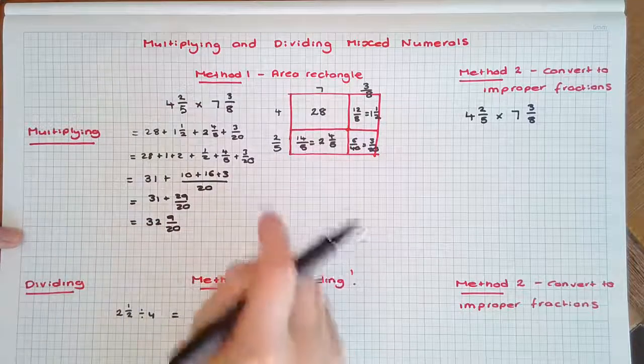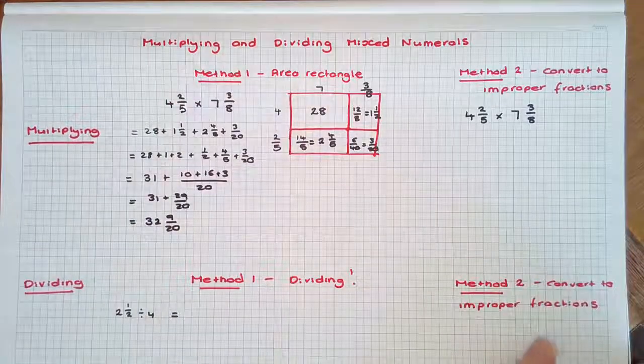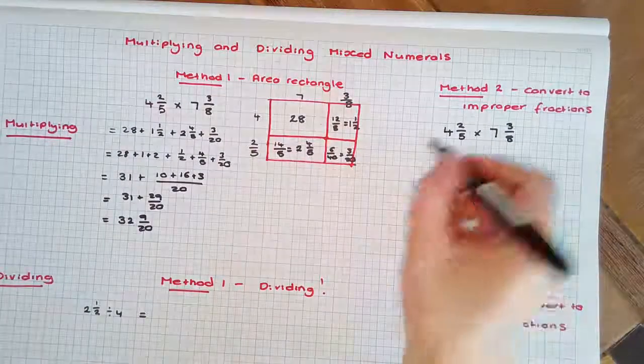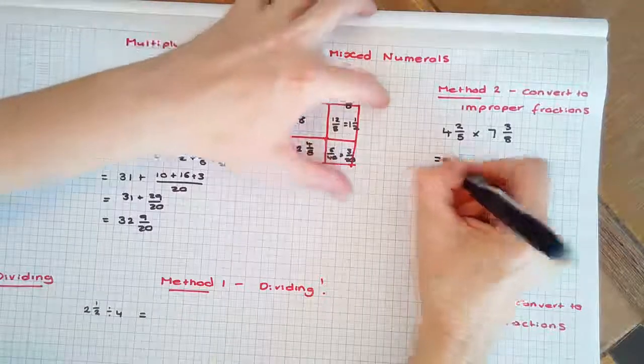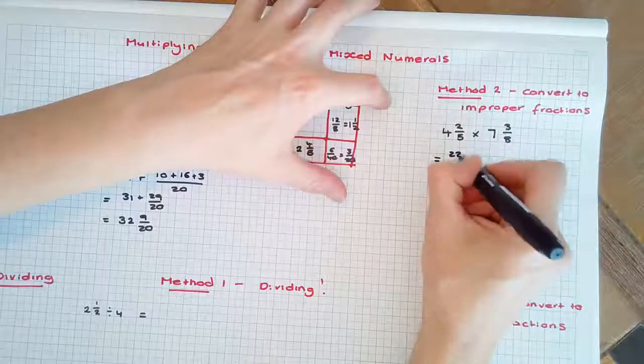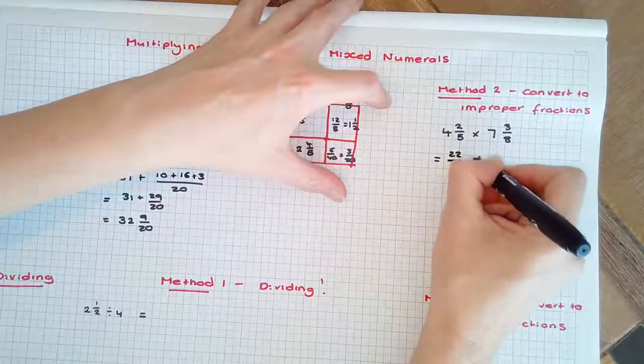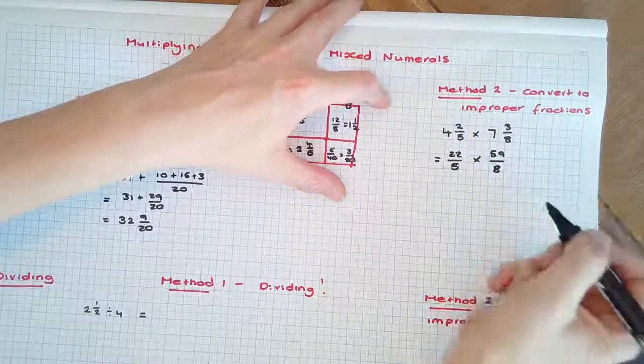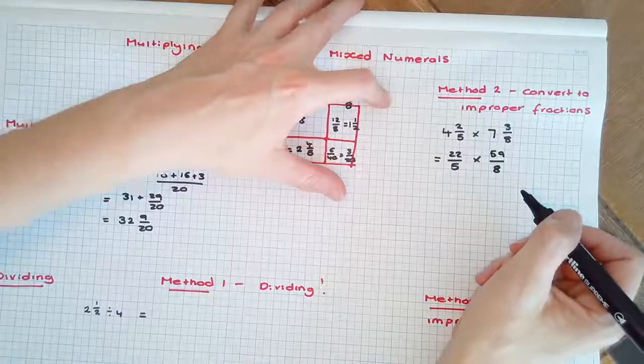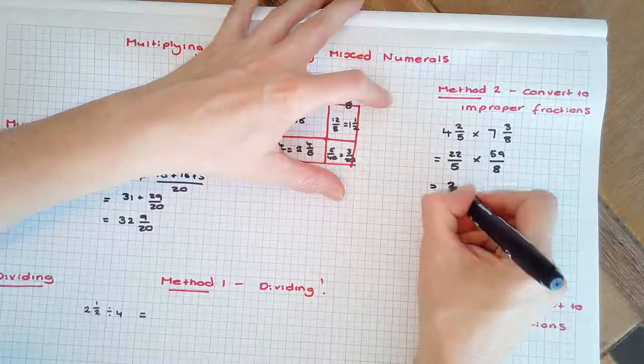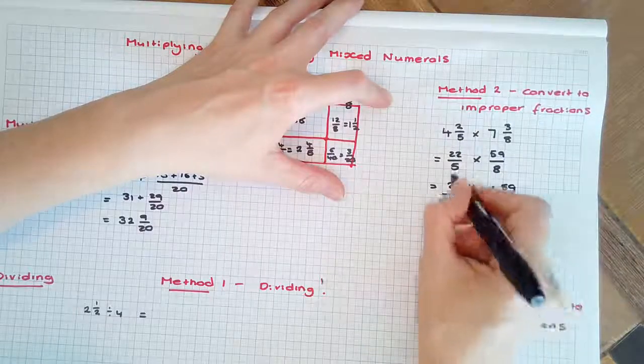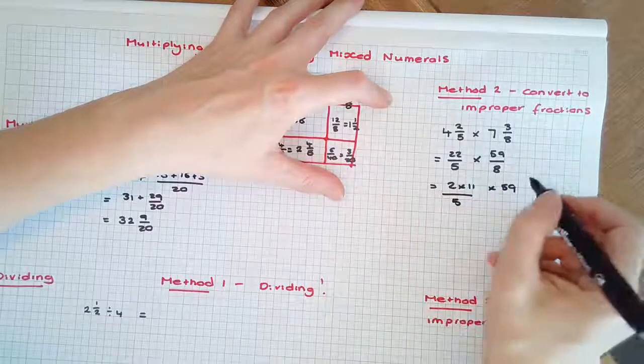The area model is a really great tool, but let's now look at the same problem converting to improper fractions first. Converting to improper fractions, we have 22/5 times 59/8. Now they're large numbers to multiply, so what we want to do is break them down into their factors. 22 is 2 times 11, and we're multiplying it by 59/5. And we can split up